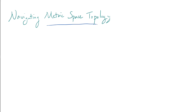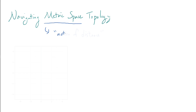What is metric space topology anyway? Let's start by answering what a metric space is informally. A metric space is essentially a set where we have a notion of a distance.